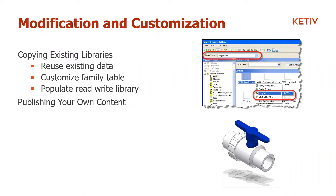When publishing your own, you have to model it from scratch and include parameters that reflect exactly what you need. These are unique components — not something that exists in Content Center — but you want a family of them. They are probably something you can still buy off the shelf, but they will start off as iParts. We'll go through an example of both approaches.